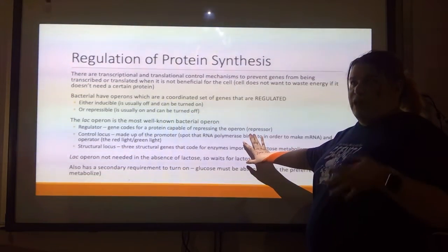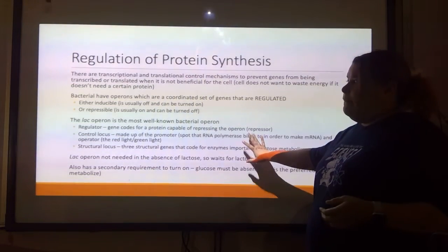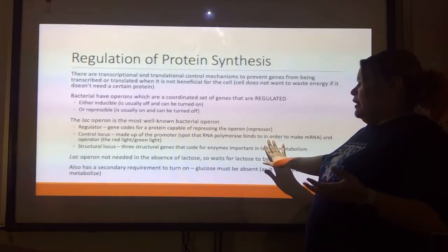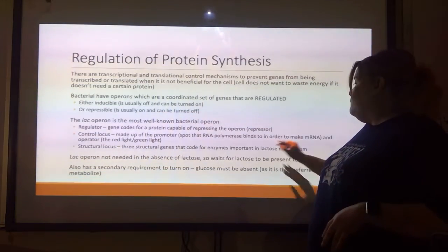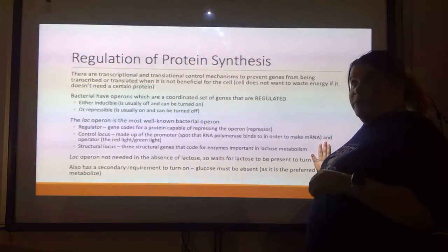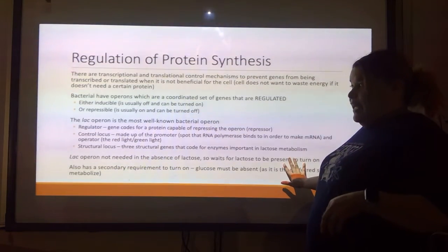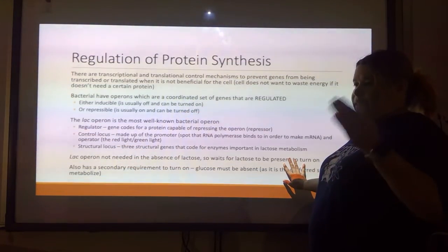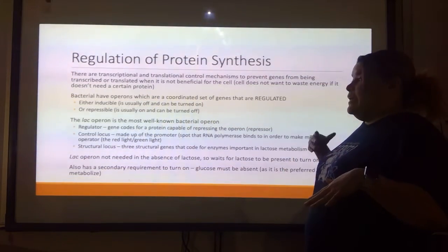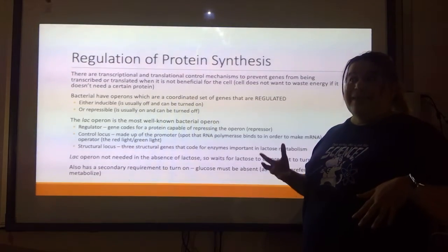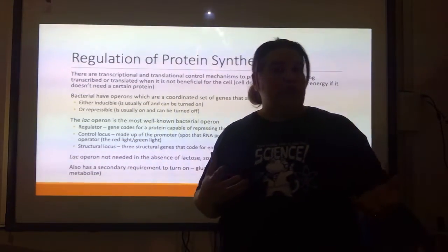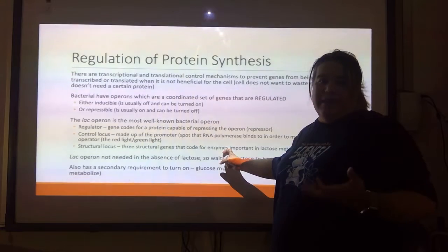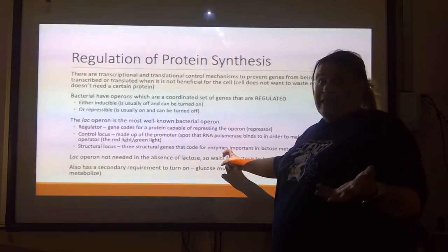The regulator contains genes that code for a protein capable of repressing the operon, regulating the expression of the structural genes. The control locus, or location, is made up of a promoter — a spot that RNA polymerase binds to in order to make an mRNA — and an operator, which is your red light/green light. Then you've got the structural locus: three genes back to back to back that code for enzymes important for lactose metabolism.